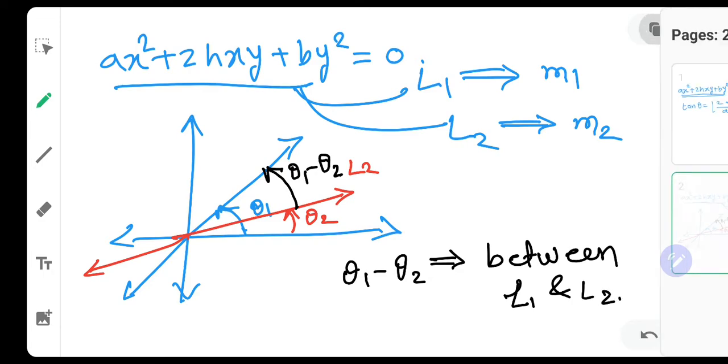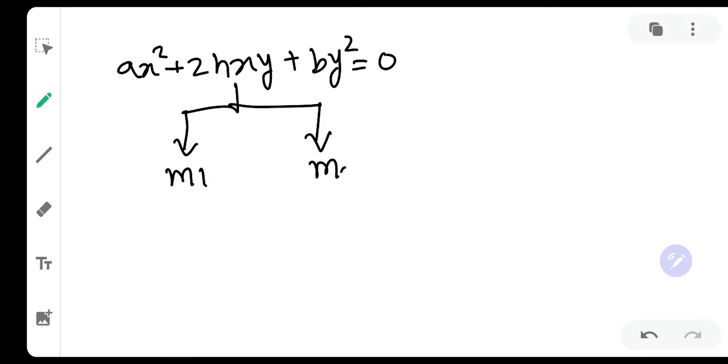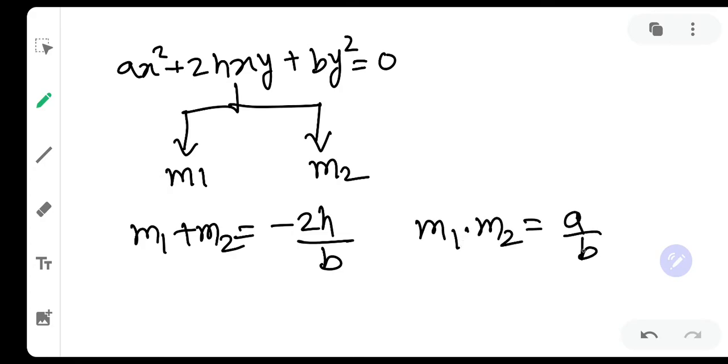Simple. Now what we are going to do is first of all analyze Ax² + 2Hxy + By² = 0. As there are two lines in it, the first line is having slope M1 and second line is having slope M2. We already know that M1 + M2 is nothing but -2H/B and M1·M2 is equal to A/B.